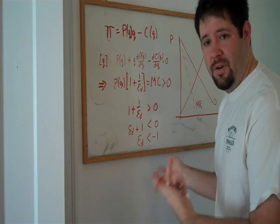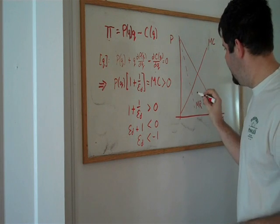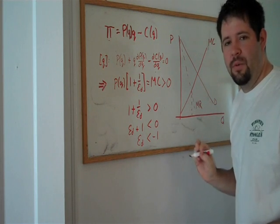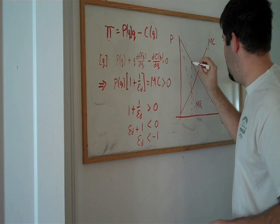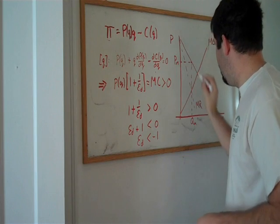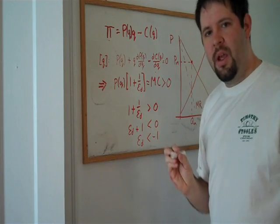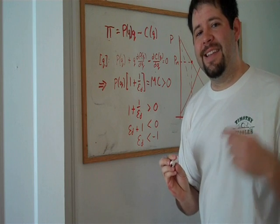So, if we go over to the graph to sort of see where this applies, remember that the quantity is set where marginal revenue equals marginal cost, and the price is set up here. What this means is that this point here must be a point at which the demand curve is elastic.